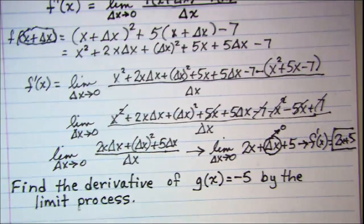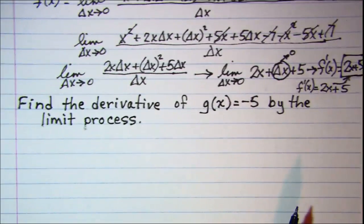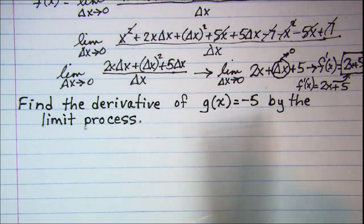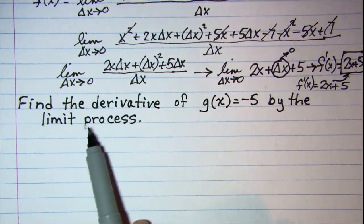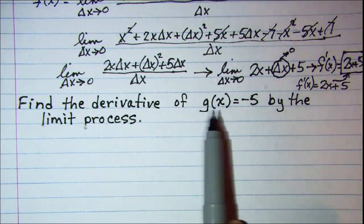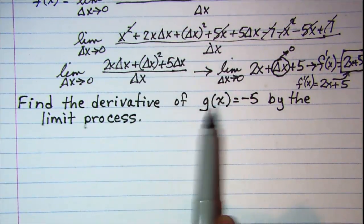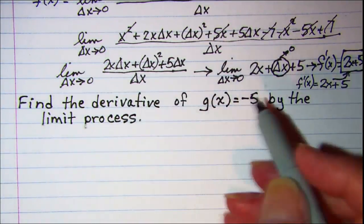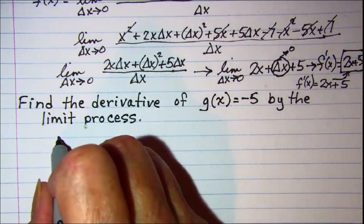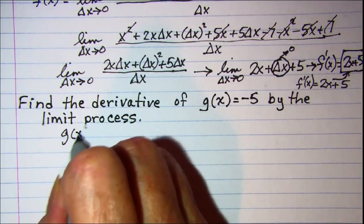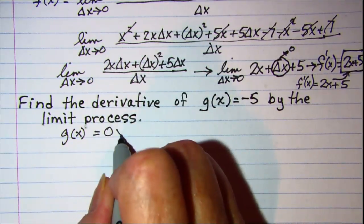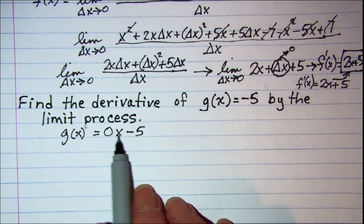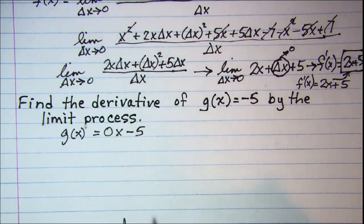Let's do another one. On this one we're asked to find the derivative of g of x equals negative 5 by the limit process. Since we need to substitute x plus delta x, this g of x equals negative 5 can be rewritten as g of x equals 0x minus 5.